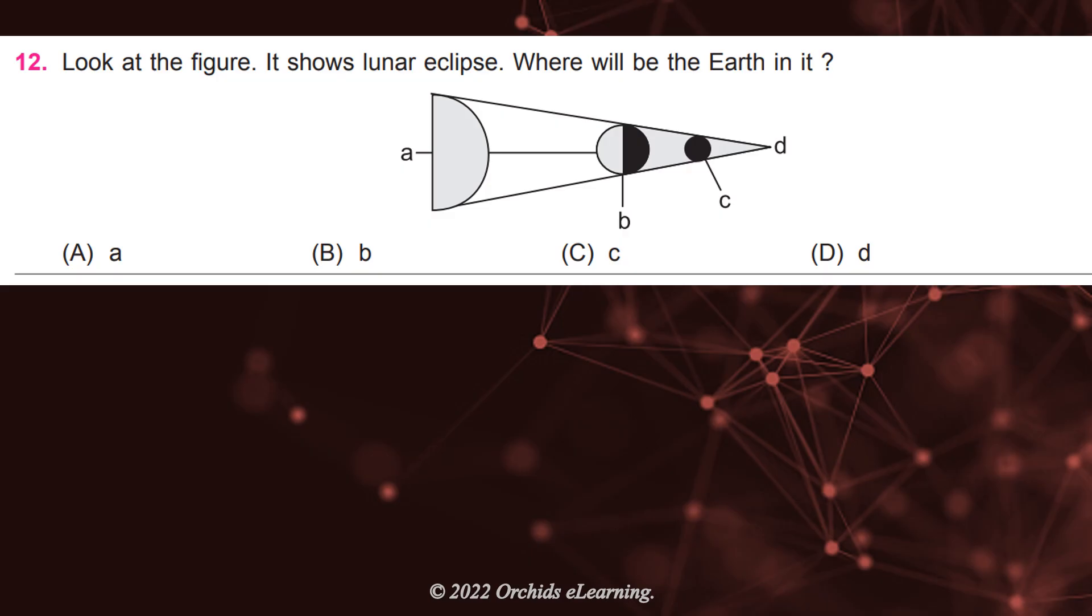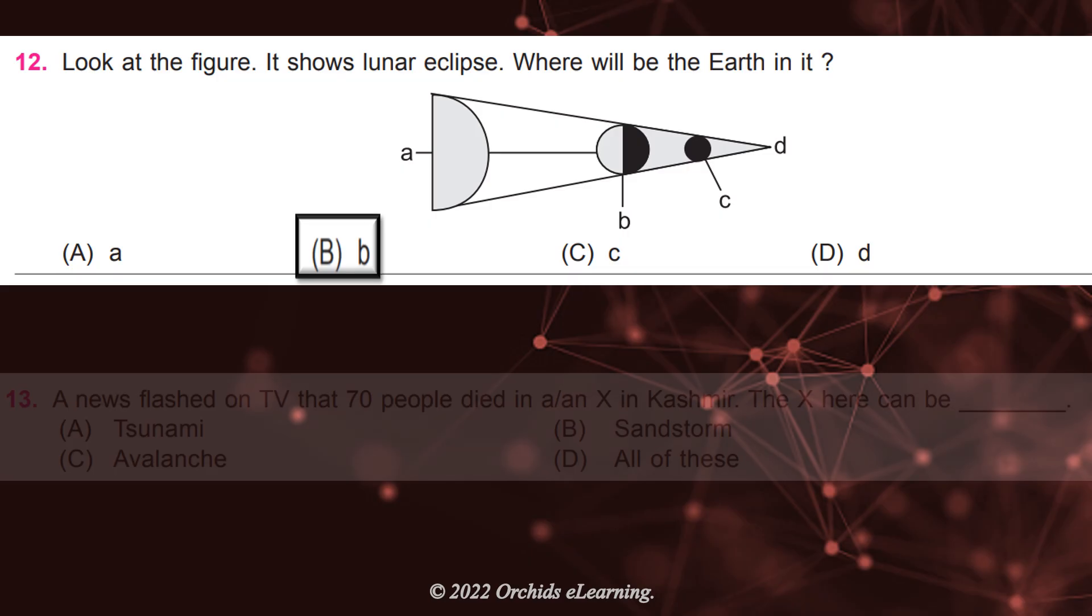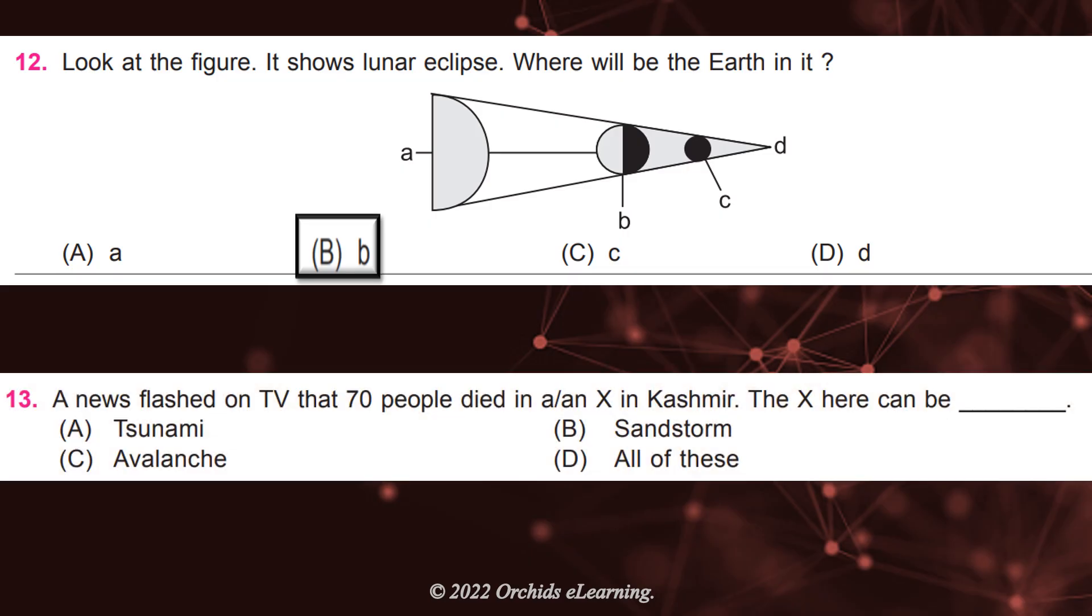It shows Lunar Eclipse. Where will be the Earth in it? Answer: B. A news flashed on TV that 70 people died in an X in Kashmir. The X here can be: Answer: B, Avalanche.